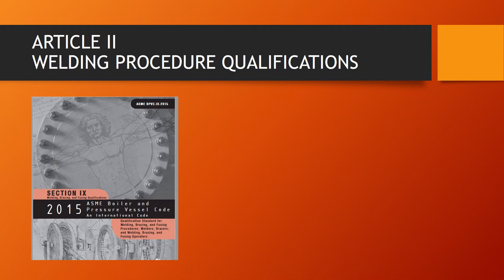Here's our good friend ASME Section 9. If we dive into Article 2, welding procedure qualifications, we're going to find some of these caveats located in a table called QW 255.